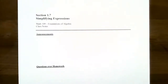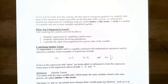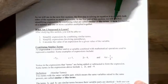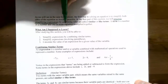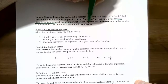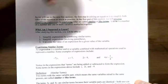Hi everyone, it's Professor Permanent. In this video, we're going to talk about simplifying expressions. What we're going to see over the next few sections is that the first step in solving an equation is to simplify both sides of the equal sign — the left side and the right side. To be able to do that, we need to understand what are variable expressions. In the first part of the section, we're going to practice simplifying expressions by combining what's called similar, or more commonly called, like terms.